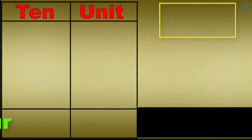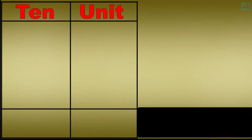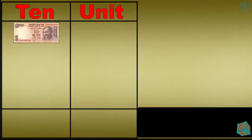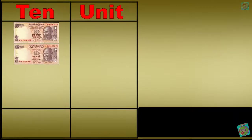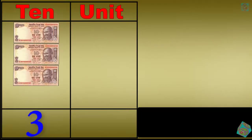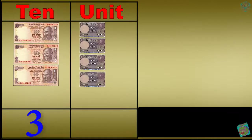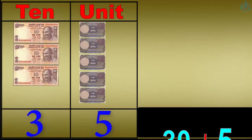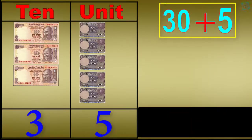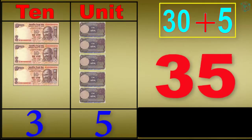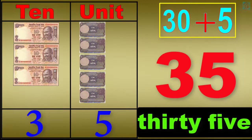1 ten, 2 tens, 3 tens, 3 tens 1 unit, 3 tens 2 units, 3 tens 3 units, 3 tens 4 units, 3 tens 5 units. 30 plus 5 equals 35. T-H-I-R-T-Y-F-I-V-E, 35.